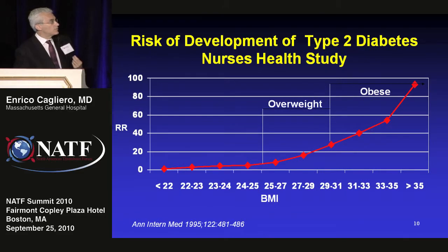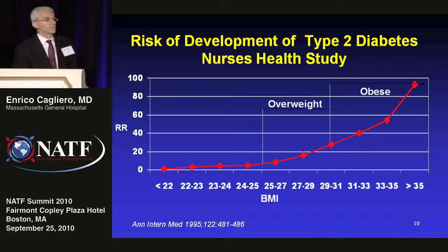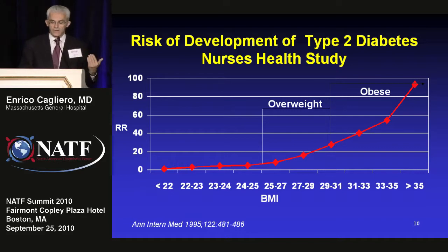The relationship between obesity and diabetes is incredibly tight. From the Nurses' Health Study, if you take an obese nurse and follow her for 14 years, her relative risk of developing diabetes compared to a normal weight nurse is about 30 to 100 times higher. An overweight nurse has about 5 to 30 times the risk. Even within the normal weight category, a BMI of 24 already carries double or triple the risk of developing diabetes compared to a BMI of 22.